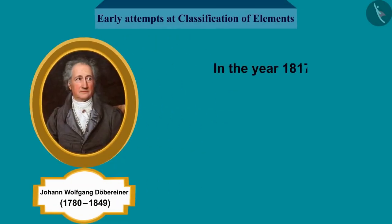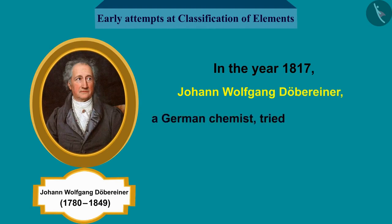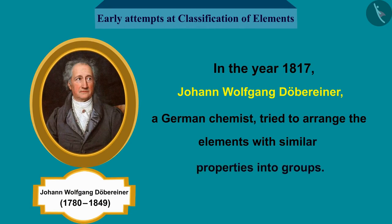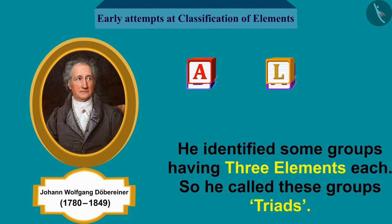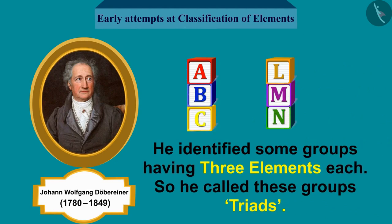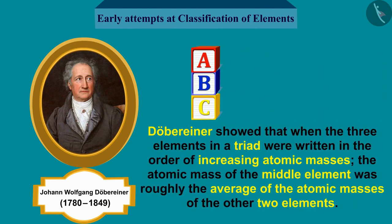In the year 1817, Johann Wolfgang Döbereiner, a German chemist, tried to arrange the elements with similar properties into groups. He identified some groups having three elements each, and called these groups triads. Döbereiner showed that when the three elements in a triad were written in the order of increasing atomic masses, the atomic mass of the middle element was roughly the average of the atomic masses of the other two elements.